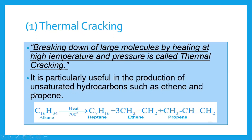The advantage of thermal cracking is that we get unsaturated hydrocarbons. Unsaturated hydrocarbon means the compound has double or triple bonds. So Ethene and Propene — both with double bonds — are unsaturated hydrocarbons. In thermal cracking we get unsaturated hydrocarbons; the carbon-to-carbon double bond or triple bond makes them unsaturated.